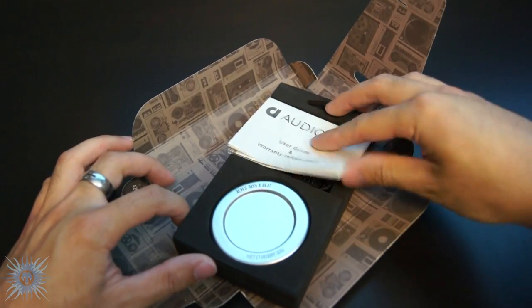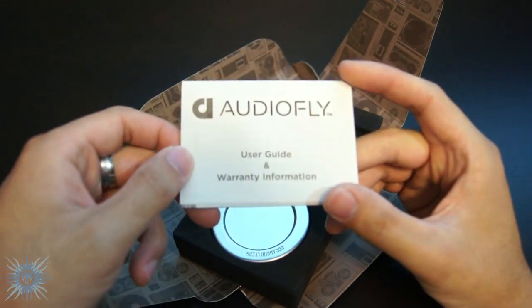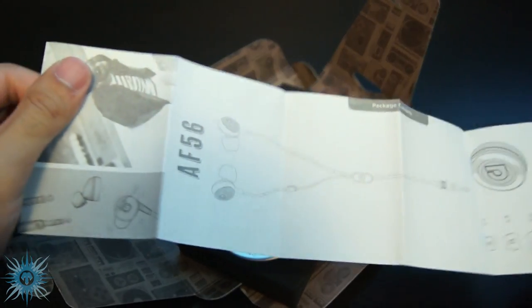So the first thing we have is the user guide and warranty documentation, which takes you through a brief tour of the headphones with the diagram showing all the main parts of the AF56s. The two-year warranty is the same as my much more expensive Sennheiser 558s, and AudioFly actually has one more higher end in-ear headphone, the AF78s, which have a very generous five-year warranty.